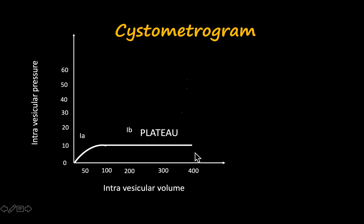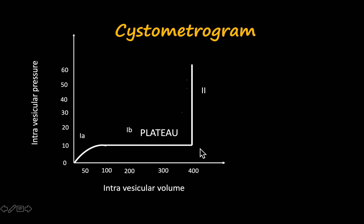Phase 2 occurs when the bladder has about 400 ml of urine, at which point the micturition reflex is triggered. We said that at 150 ml the first urge to micturate is felt, and at 400 ml the micturition reflex is triggered and the person must void. If he doesn't void, the dotted curve shows the pressure-volume relationship beyond 400 ml, representing a sense of discomfort. At this point he must micturate, otherwise it becomes very painful.